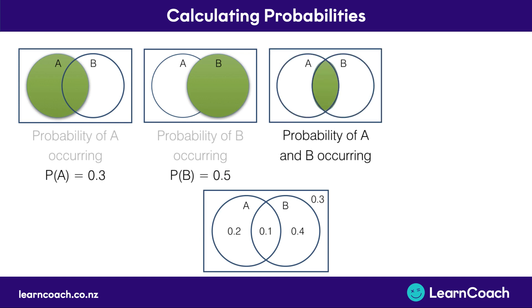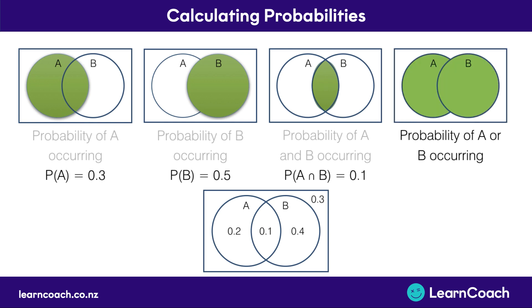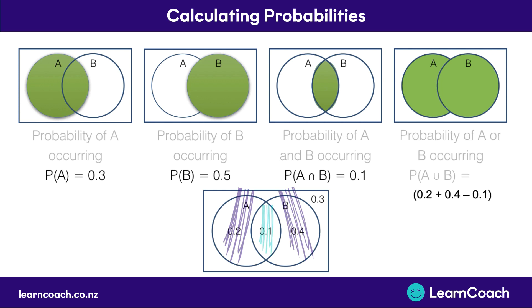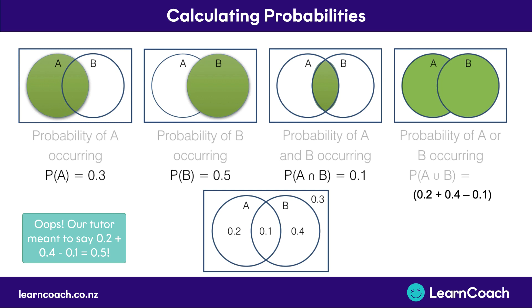Now if we look at the intersection between A and B — the probability of both A and B occurring — we just look at the Venn diagram and we see this is 0.1. Now if we look at the probability of A or B occurring, we add all of the numbers that have been shaded in the green circles, so 0.2 plus 0.1 plus 0.4 equals 0.7.